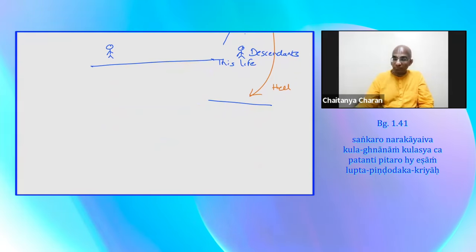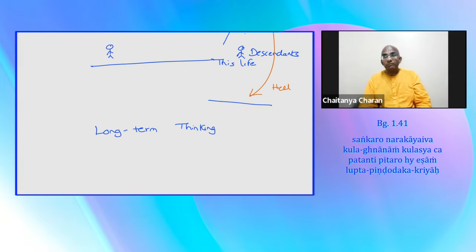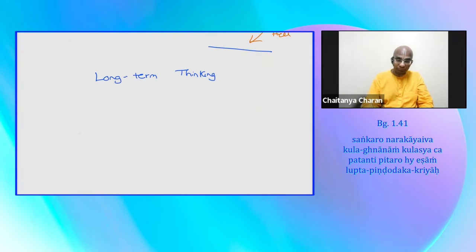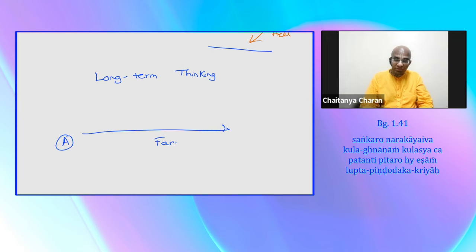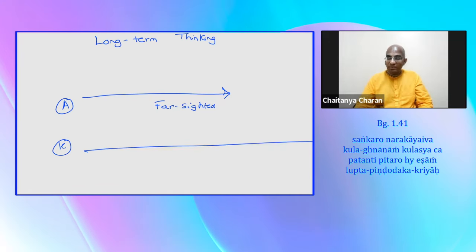Without getting into technicalities of all this, this particular worldview, the key point is that Arjuna is thinking long-term. Arjuna is thinking not just I don't want to fight because it doesn't feel good to me. He's saying I don't want to fight because the consequences are catastrophic. In many ways, Arjuna is farsighted. But what Krishna will later say is that he is not farsighted enough.